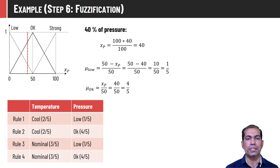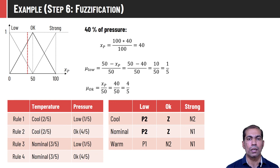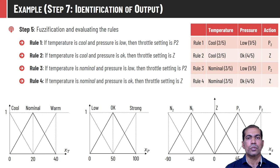Temperature belongs to sets cool and nominal, and pressure belongs to sets low and okay. With two variables for each, we get four different rules. Rule 1: temperature is cool, pressure is low. Rule 2: temperature is cool, pressure is okay. Rule 3: temperature is nominal, pressure is low. Rule 4: temperature is nominal, pressure is okay. The corresponding control actions are looked up from the rule base.